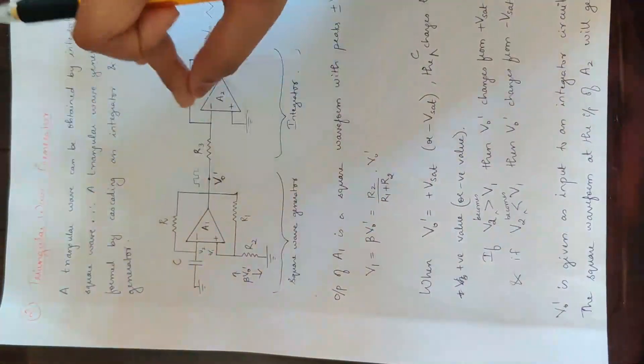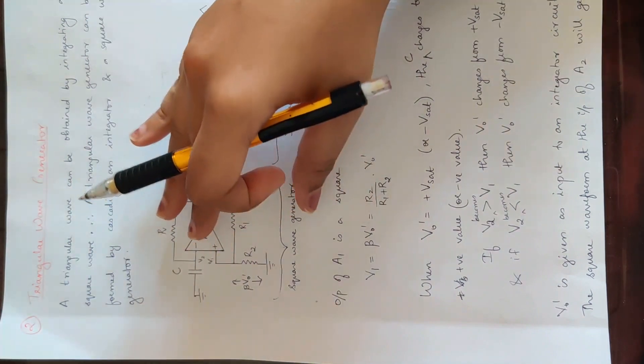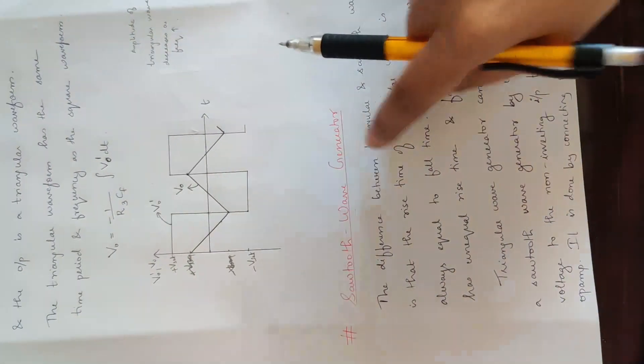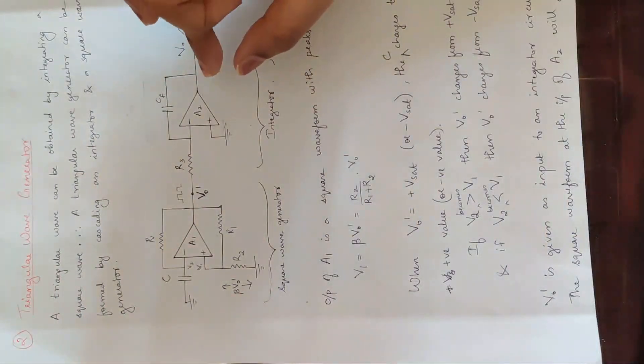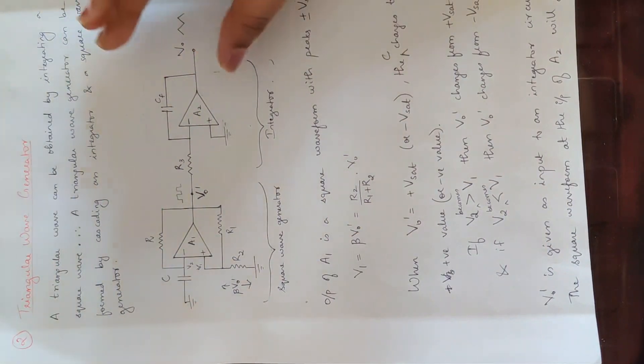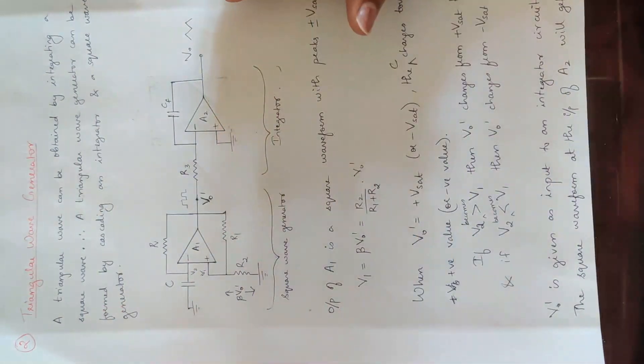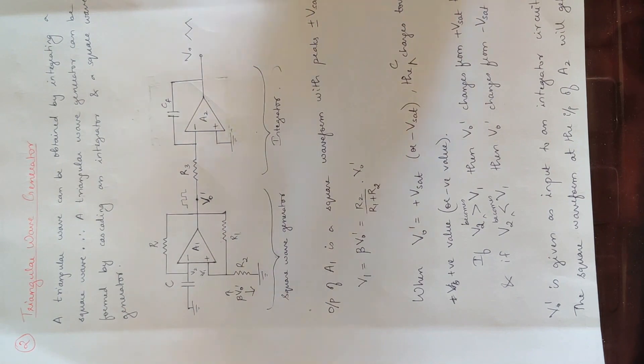A triangular wave generator can be built using a square wave generator cascaded with an integrator. We can make changes to the triangular wave generator circuit. This circuit can also be used as a sawtooth wave generator, where the output waveform is triangular and the square waveform is integrated.